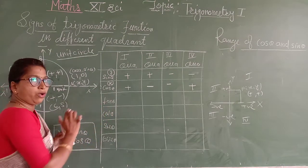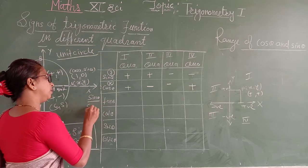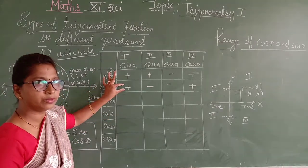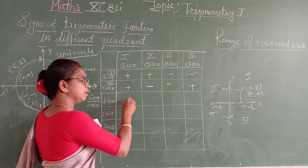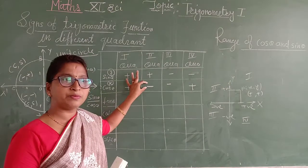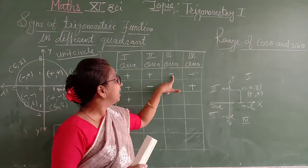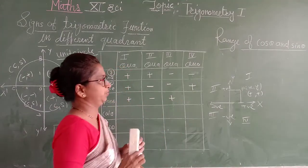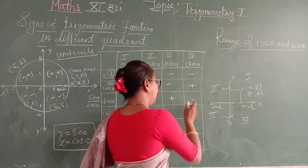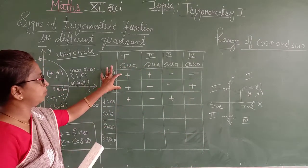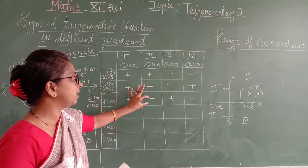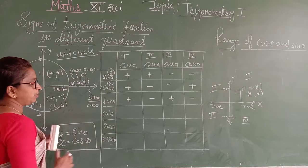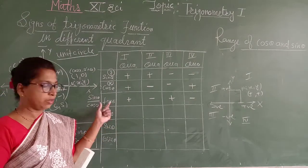Now, tan θ means sin θ divided by cos θ. So: in the first quadrant, positive divided by positive gives positive. In the second quadrant, positive divided by negative gives negative. In the third quadrant, negative divided by negative gives positive. In the fourth quadrant, negative divided by positive gives negative. Cot θ is the reciprocal of tan θ, so cot follows the same signs as tan.